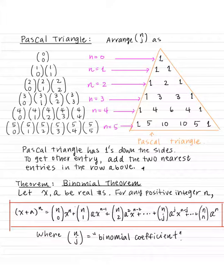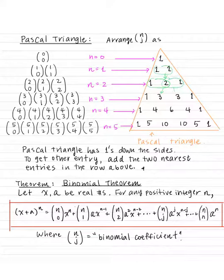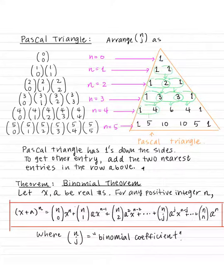To get any other entry, add the two nearest entries in the row above. For instance, looking at n=1 and n=2: 1 plus 1 equals 2. For n=2 and n=3: 1 plus 2 gives 3, and 2 plus 1 gives 3. For n=3 and n=4: adding pairs gives 4, 6, 4. For n=4 and n=5: 1+4=5, 4+6=10, 6+4=10, 4+1=5.